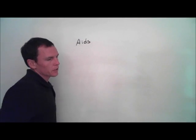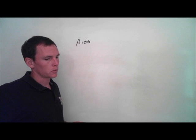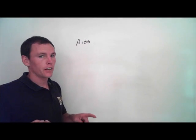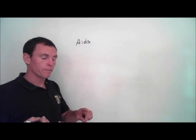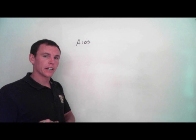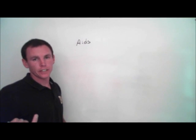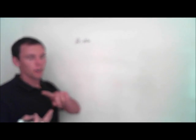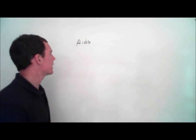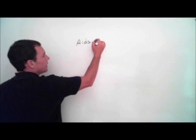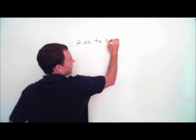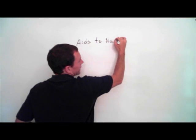We will hear these referred to sometimes as A-TONs. These are Federal Aids to Navigation — A-TONs. Private Aids to Navigation are P-ATONs. So we have A-TONs and P-ATONs — Aids to Navigation.